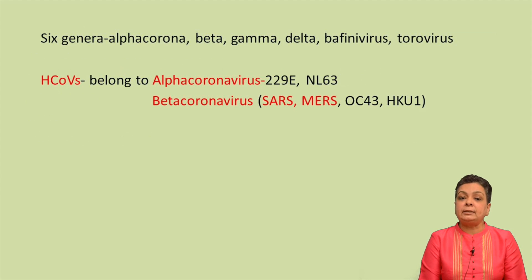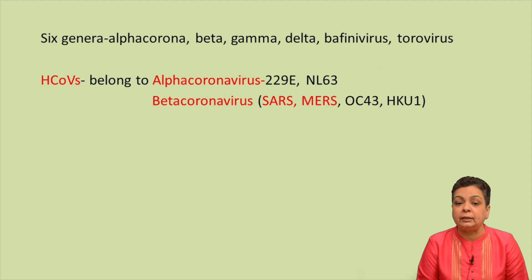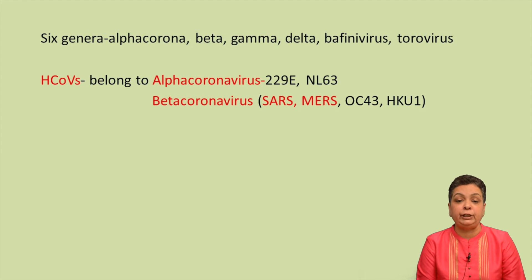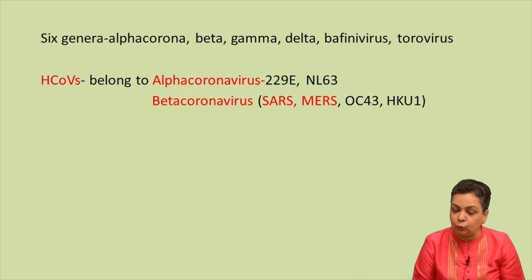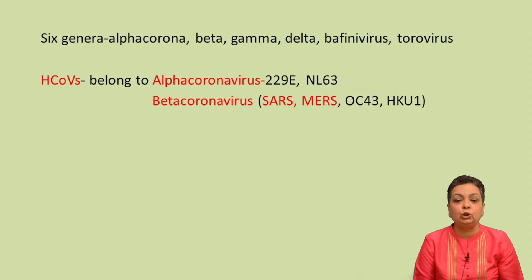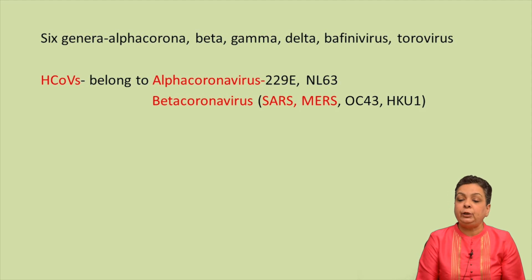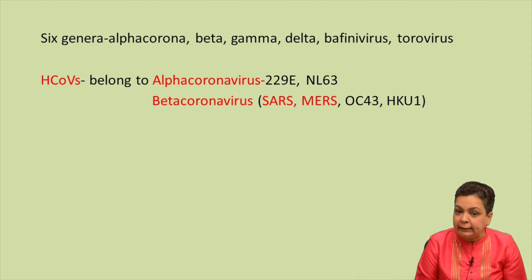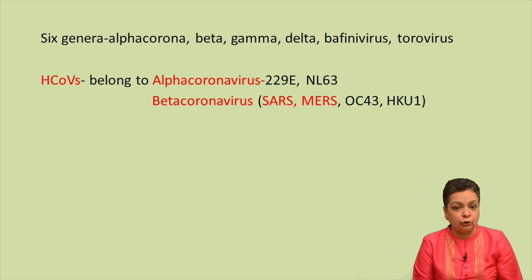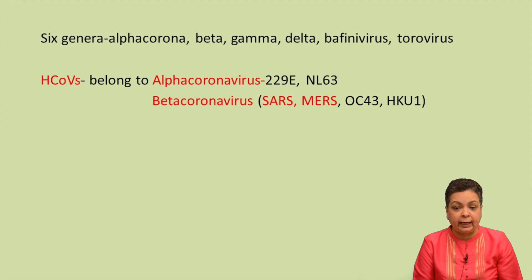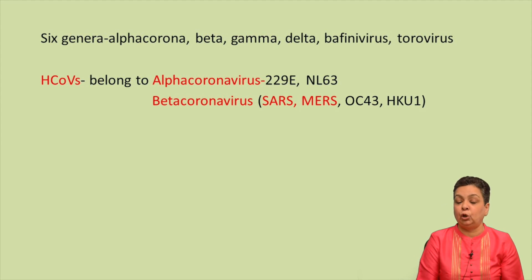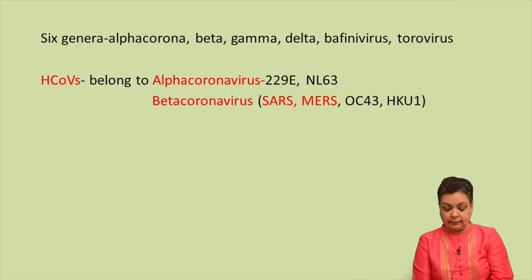Amongst the six genera, coronaviruses contain alpha, beta, gamma, delta, baffini, and toroviruses. Human coronaviruses belong to the alpha and beta coronavirus genera. NL63 and 229E belong to alpha coronaviruses, while SARS, MERS, OC43, and HKU1 belong to the beta coronaviruses.